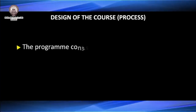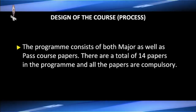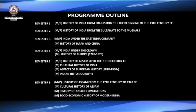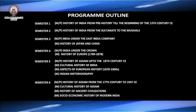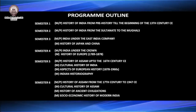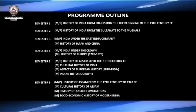Namaskar. The BA program in history consists of both major as well as common papers. There are a total of 14 papers in the program, and all the papers are compulsory for the learners. The BA program in history is a three-year program which consists of six semesters and a total of 14 papers. Six of the papers are common papers and eight are major papers.